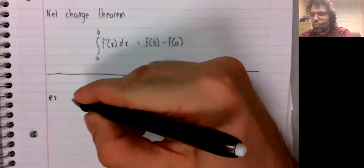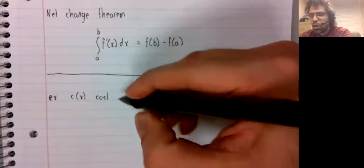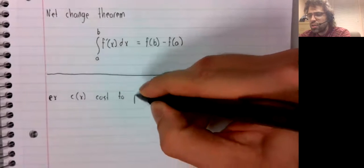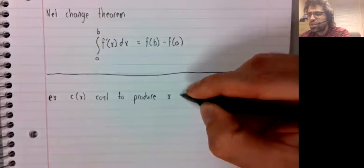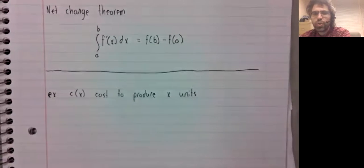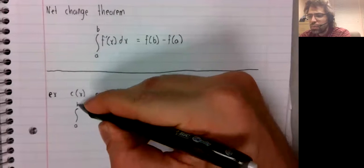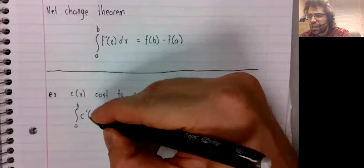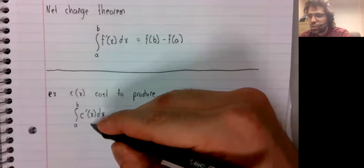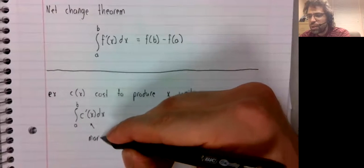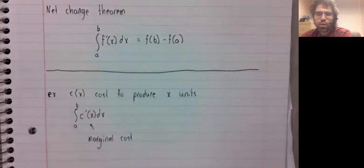For example, let c of x be the cost to produce x units of something. We may remember that the derivative of the cost function has its own special name. It's the marginal cost.